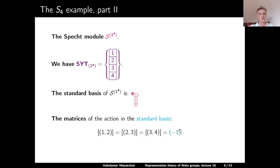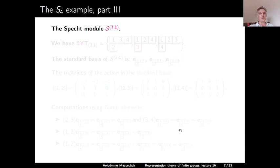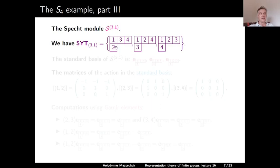The next Specht module is S^{3,1}. There are three standard Young tableaux of this shape: the tableau with 1, 3, 4 in the first row and 2 in the second; the tableau with 1, 2, 4 in the first row and 3 in the second; and the tableau with 1, 2, 3 in the first row and 4 in the second. The standard basis of the Specht module consists of three polytabloids corresponding to these standard Young tableaux.